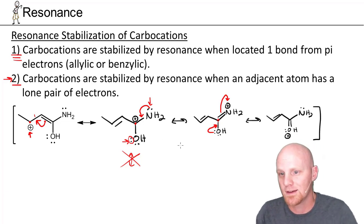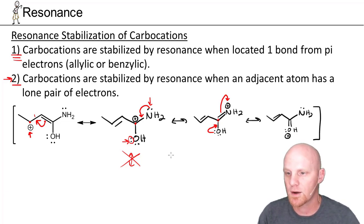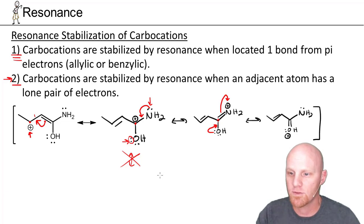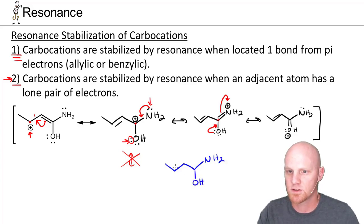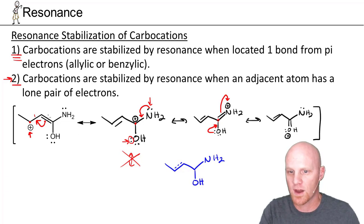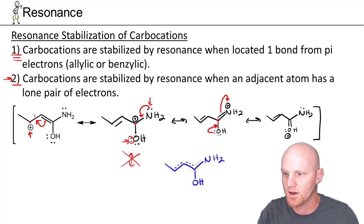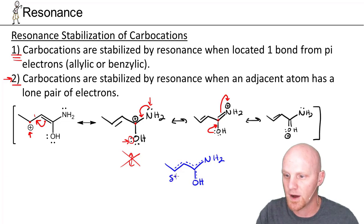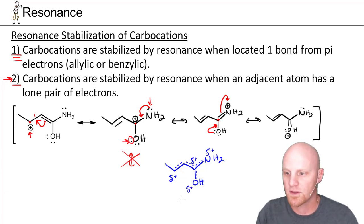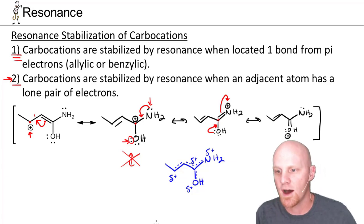Now let's talk about major versus minor resonance contributors. When you have a bunch of resonance structures, your average structure looks like some average of all of them. In this case our resonance hybrid has partial pi bonds in several locations and partial positive charges on various atoms. The resonance hybrid looks more like some of these structures than others, and we need to decide which is best.